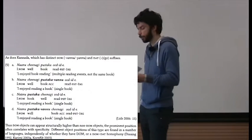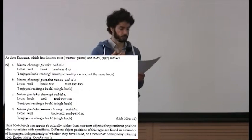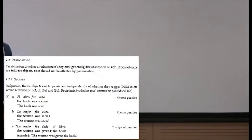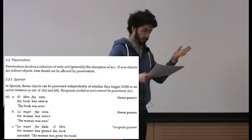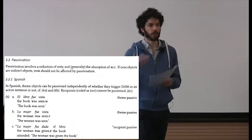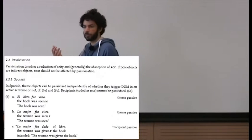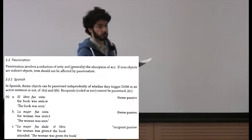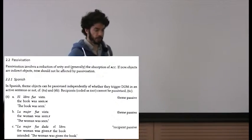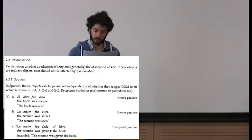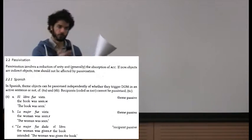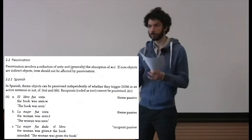The next test is passivization. In example 6 on page 4, we have the passive counterparts to the active sentences in 1. 6a is 'El libro fue visto' — the book was seen — and 6b is 'La mujer fue vista' — both are theme passives. This happens independently of whether the direct object would have triggered differential object marking or not. However, 6c shows that Spanish doesn't allow passivizing a recipient: 'La mujer fue dada el libro' with the intended meaning 'the woman was given the book' is ungrammatical. We can passivize direct objects in Spanish, but not indirect objects.